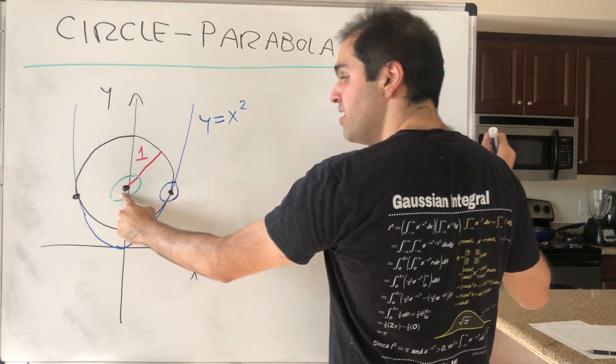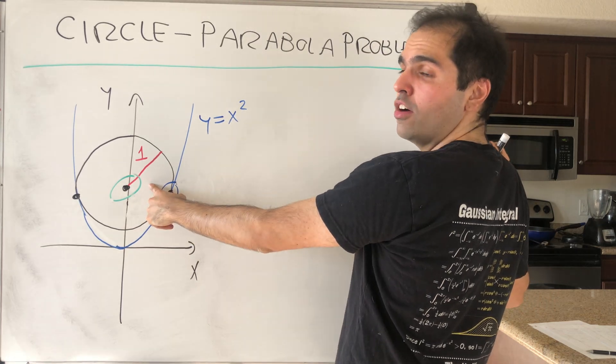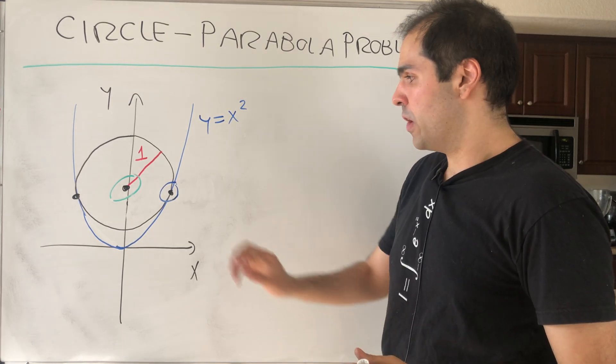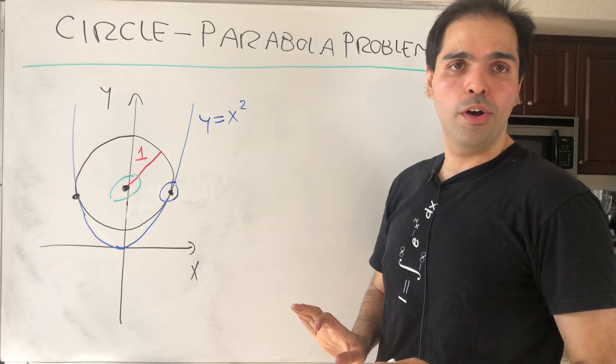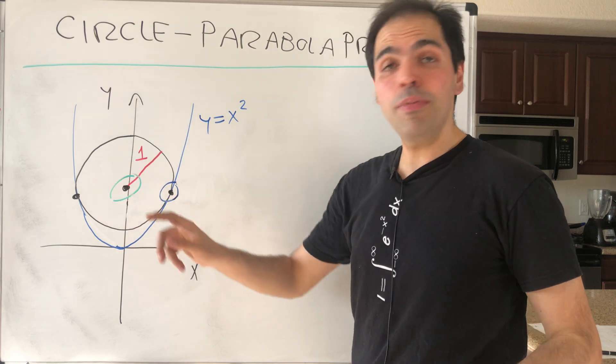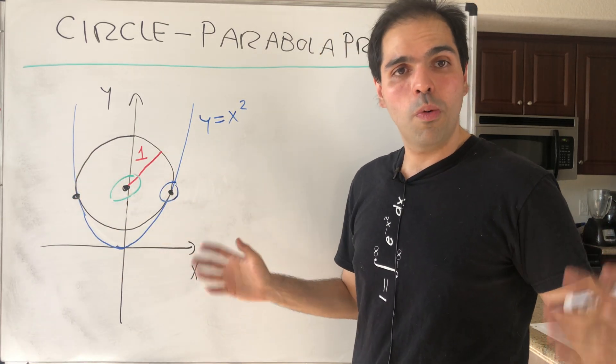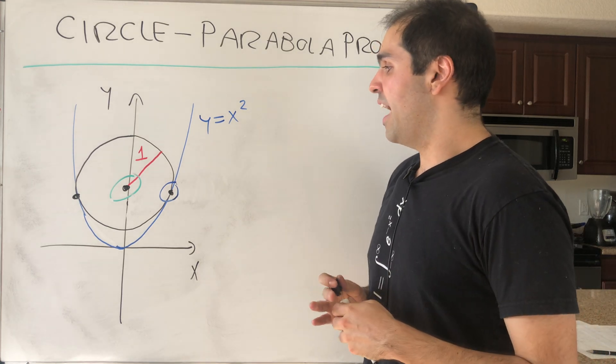Because if it's just a little bit to the right of the y-axis, then it cannot be tangent to the parabola anymore. It must intersect at two points. If it's a little bit to the left, same thing. It would intersect at two points and it wouldn't be tangent anymore.